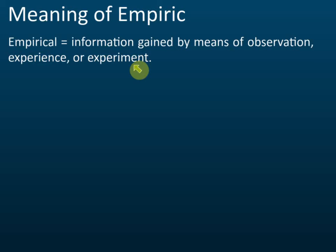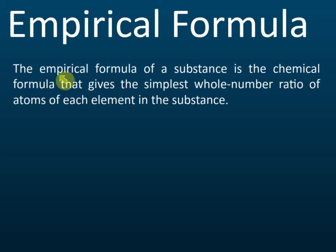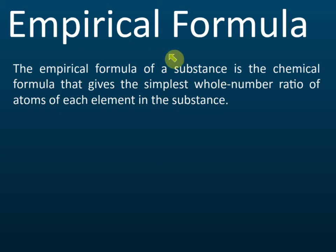So an empirical formula is the formula we get from experiment — that's why we call it empirical. The definition of empirical formula is: the chemical formula that gives the simplest whole number ratios of atoms of each element in the substance. So what does this mean? Let's use the example of ethene.